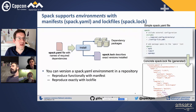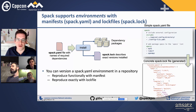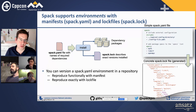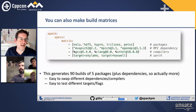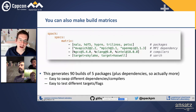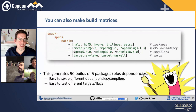We support environments with manifests — a spec.yaml file you can version in a repository. We'll produce a lock file with exactly what we built, including all those configuration options. It's easy to reproduce something functionally with a manifest and resolve it differently on different systems, or reproduce it exactly with a lock file. You can also define a build matrix: for example, build five packages with three different MPI implementations, three different compilers, and two different targets — generating 90 different builds of five packages, not counting dependencies.